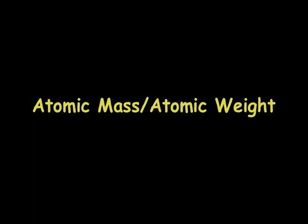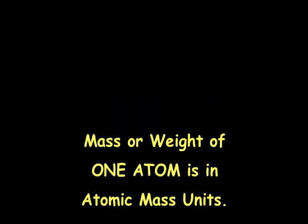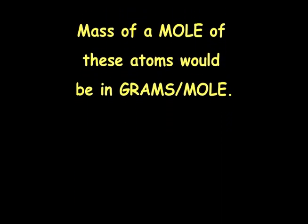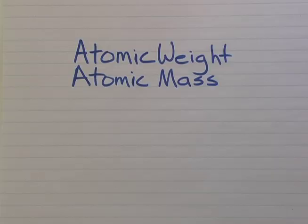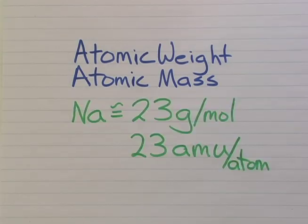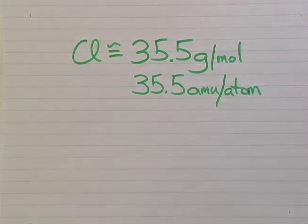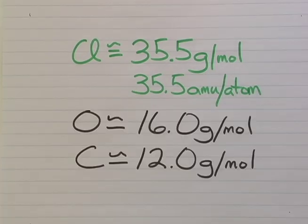Let's take atomic mass or atomic weight. The mass or weight of one atom is measured in atomic mass units. The mass of a mole of these atoms would be in grams per mole. For example, sodium on the periodic table is about 23 grams per mole, which means one atom would be 23 atomic mass units per atom. Chlorine the same way: 35.5 grams per mole or atomic mass units per atom. Oxygen is 16, carbon is 12.